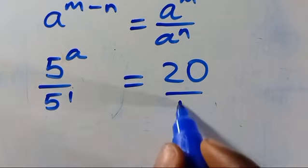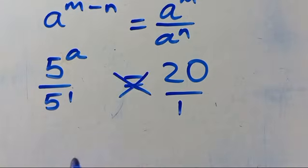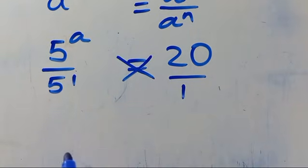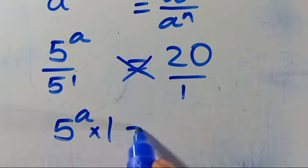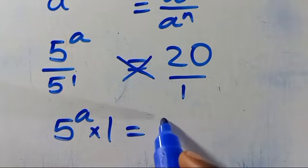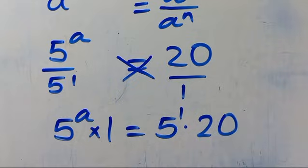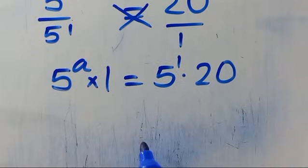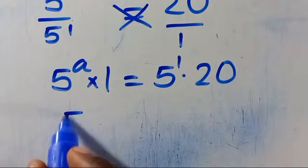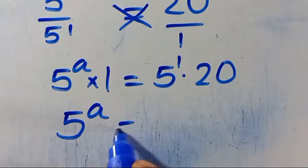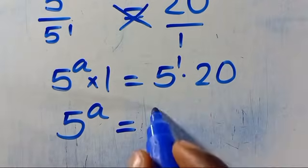Then from here let's cross multiply. So this will be 5 to the power of A times 1 equals 5 to the power of 1 multiplied by 20. So 5 to the power of A equals 5 times 20, which gives us 100.